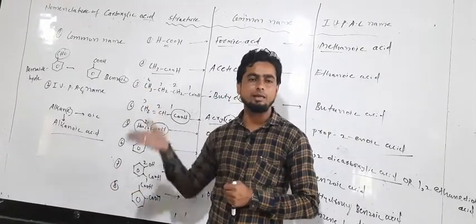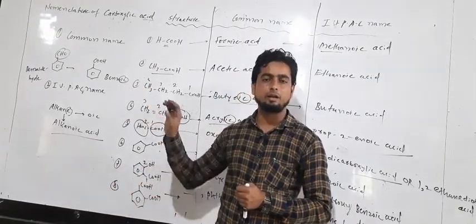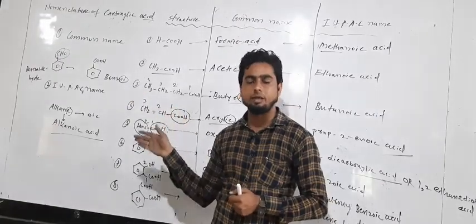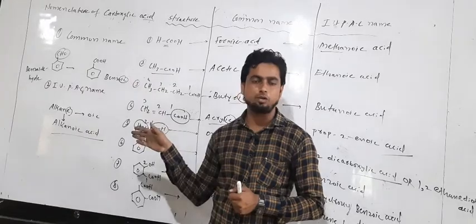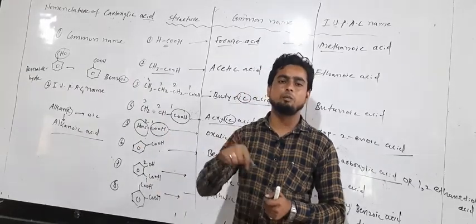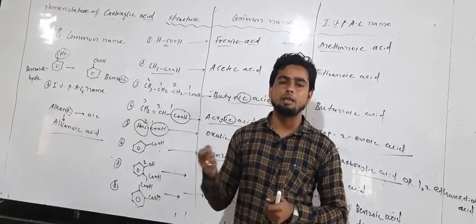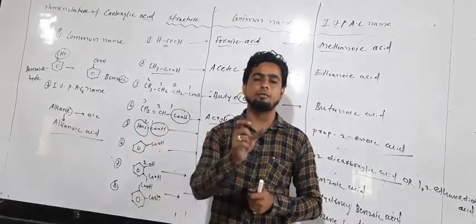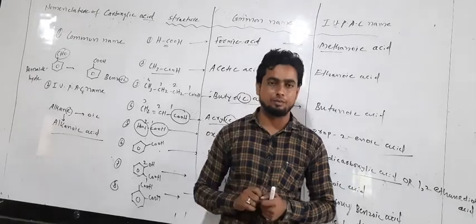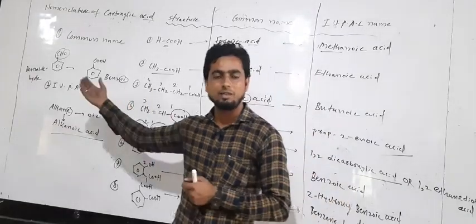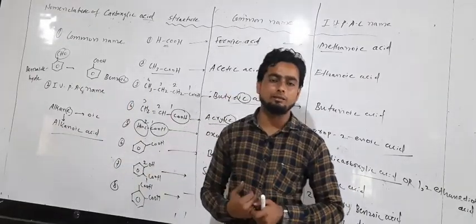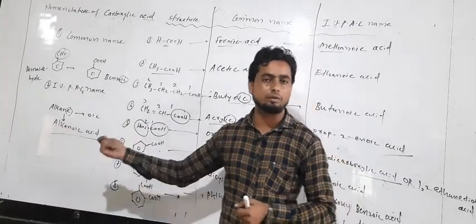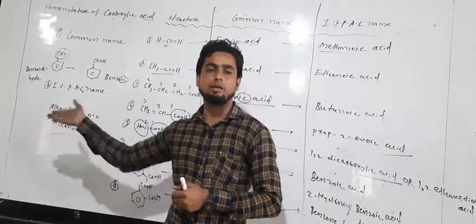Similar to aldehyde: in the common name of aldehydes we add '-al,' whereas in the acid we write '-oic' in the common name. In the IUPAC name of aldehydes we replace '-e' from alkane with '-al,' giving alkanal — for example butanal — using the prefix 'al.' Whereas in the IUPAC name of carboxylic acid we replace '-e' from alkane with '-oic,' giving alkanoic acid — for example methanoic acid.